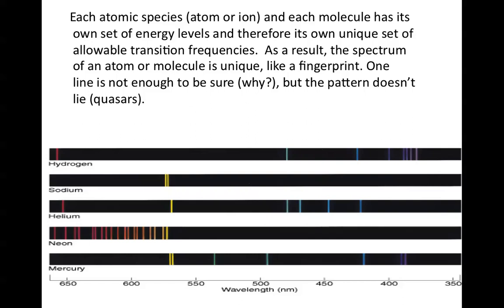One line is not enough to be sure whether you have a particular atom, because in some cases, there are lines of different atoms that lie almost on top of each other. But the pattern doesn't lie. So you look here in this illustration, and you look at the pattern of hydrogen lines in visible wavelengths, and the pattern of sodium or helium, they're very, very different, and they're easily distinguishable one from the next.